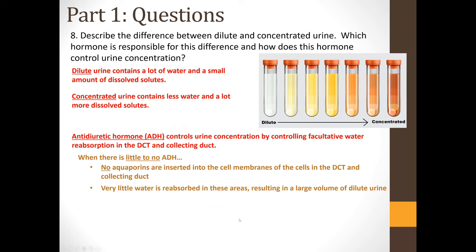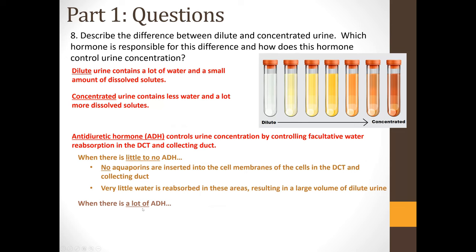Producing dilute urine is the desired state because it reduces your chances of having a kidney stone, and this happens when you drink a lot of water. When there is a lot of ADH — which occurs when you're dehydrated — aquaporins are inserted into the DCT and collecting duct cell membranes, and water is reabsorbed by osmosis, resulting in a small volume of concentrated urine, which increases susceptibility to kidney stones.